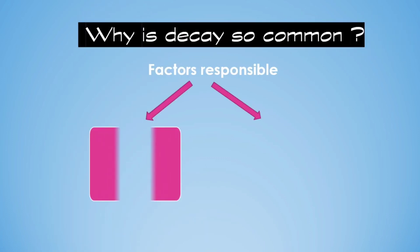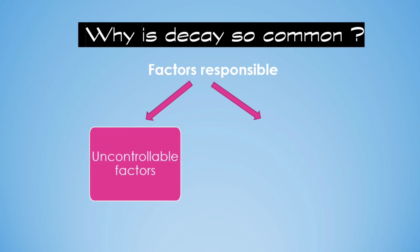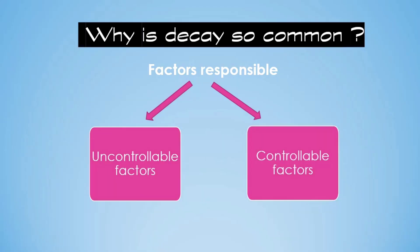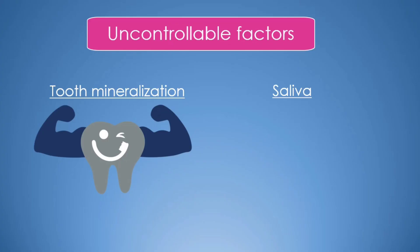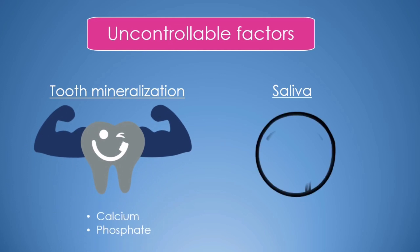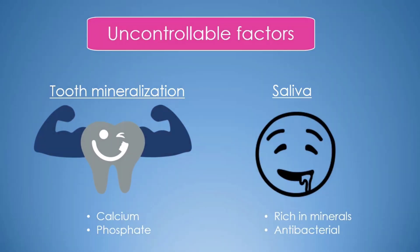So why is decay so common? What are the factors responsible? Let's divide them into two: uncontrollable factors — the ones we can't change, not in our hands — and on the other side, controllable factors — the ones we can change. Our tooth is made up of lots of minerals which make it stronger. The more mineralized the tooth, the greater its resistance to decay; and vice versa, the less mineralized, the less resistance.